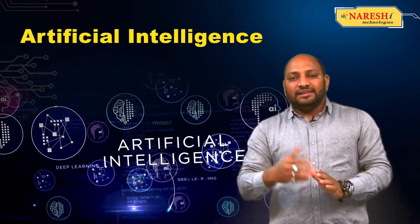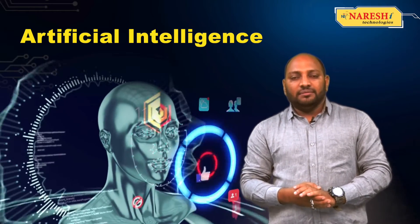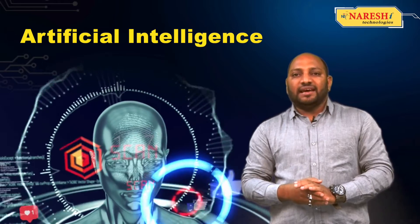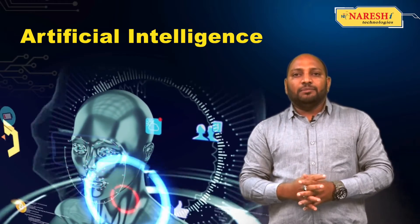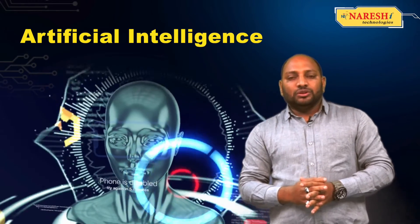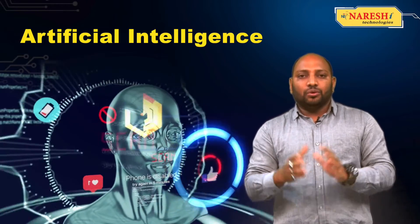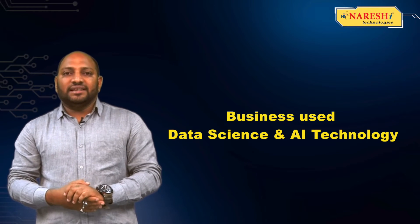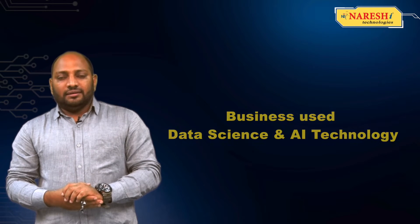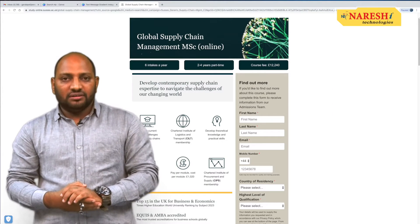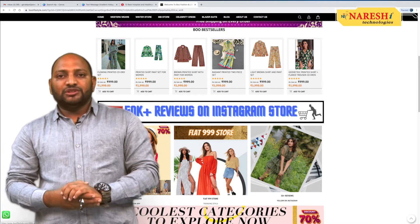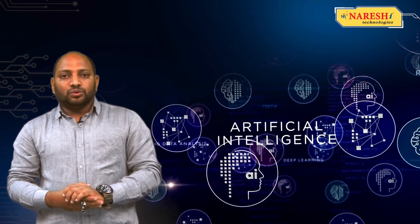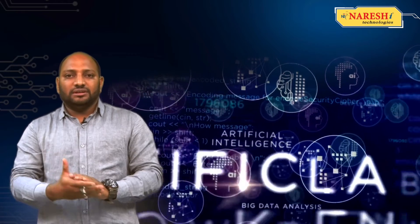Artificial intelligence means applying intelligence to machines using these algorithms. For example, in Meta, face verification and face tagging is used on the front end, while the back end consists of deep learning models, ML models, and NLP models. These are the core topics of the data science program, used heavily in industries like banking, supply chain, manufacturing, construction, healthcare, and fashion.